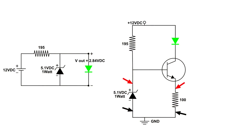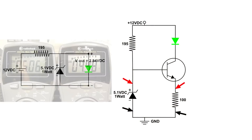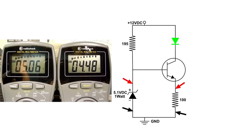As we saw in the video, the voltages did not change. The voltage across the Zener diode stayed at 5 volts, and even when I shorted out the load, the voltage did not change across the Zener diode or the 100 ohm resistor.